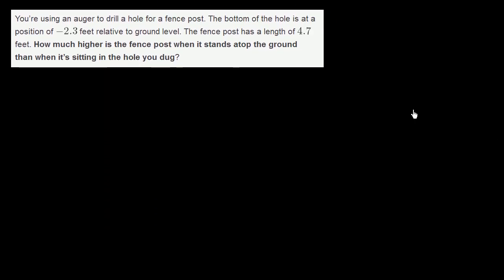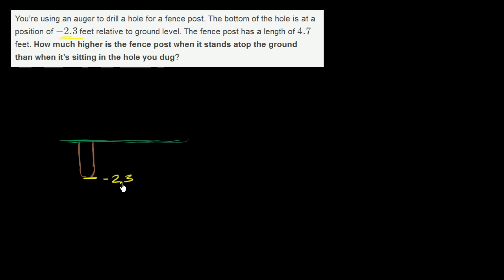Let's do one more. You're using an auger to drill a hole for a fence post. The bottom of the hole is at a position of negative 2.3 feet relative to ground level. So here's the ground level, and I drill a hole — the bottom of the hole is at a position of negative 2.3 feet relative to ground level. The fence post has a length of 4.7 feet. How much higher is the fence post when it stands atop the ground than when it is sitting in the hole you dug?